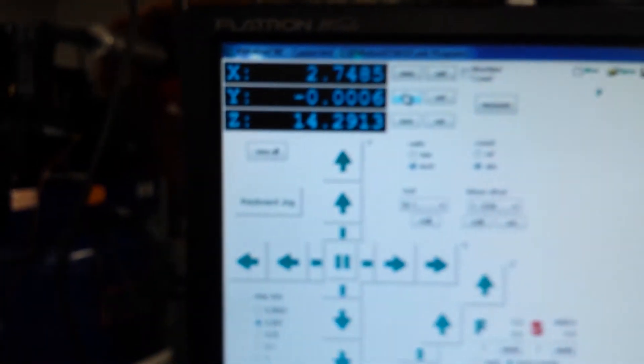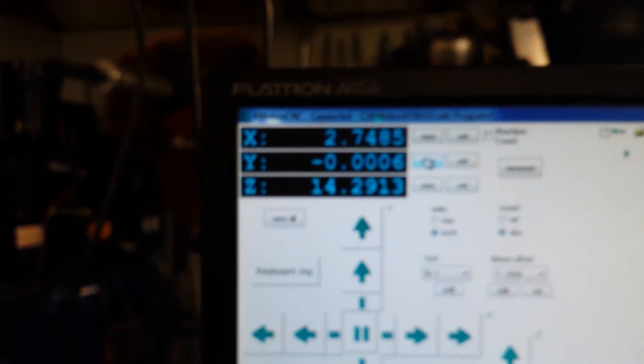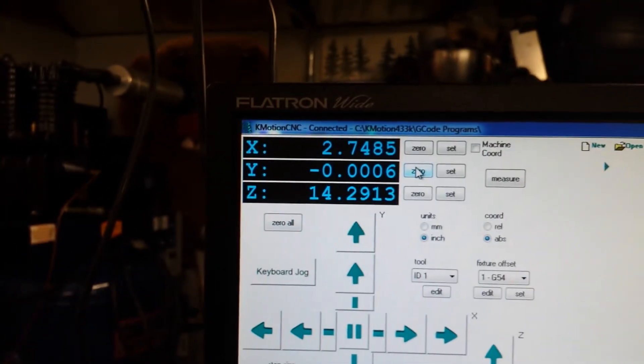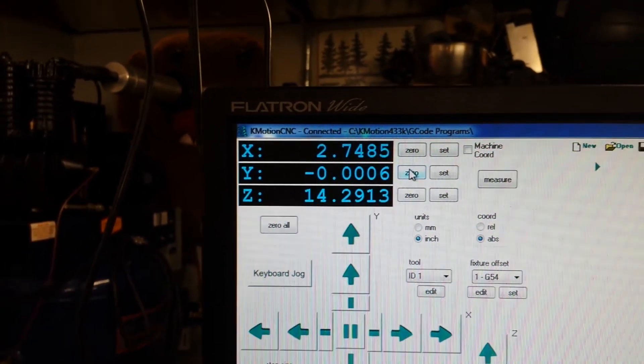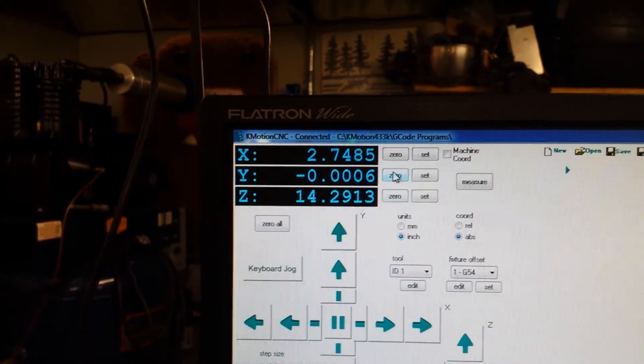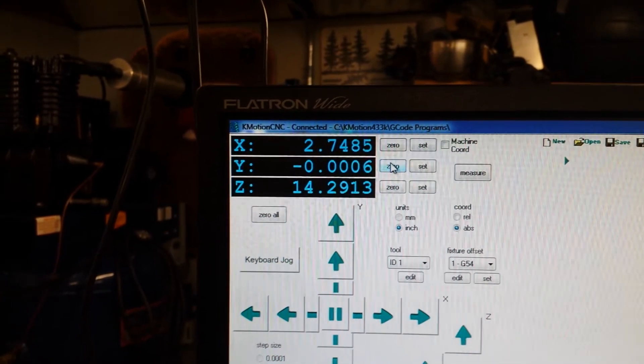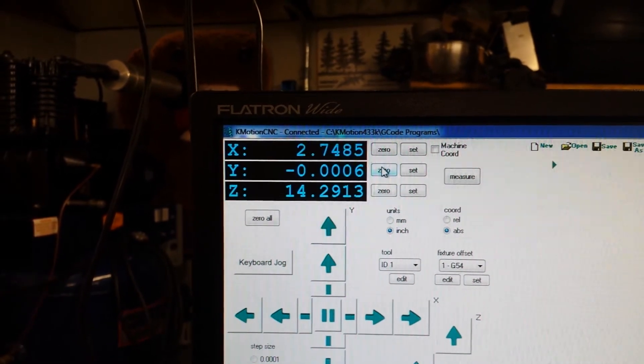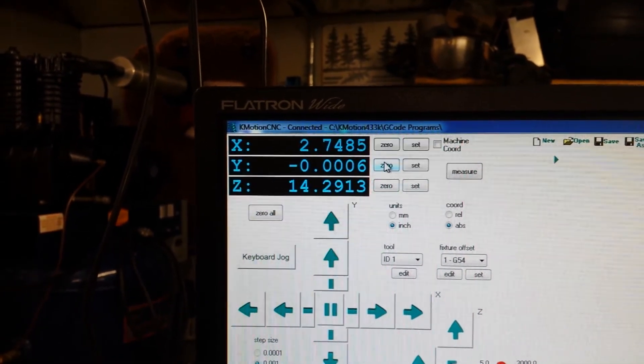And now we see the y-axis at 6 ten-thousandths. So that is the backlash in my y-axis. This is significantly improved over my previous measurement of 1.3 thousandths, or 13 ten-thousandths.